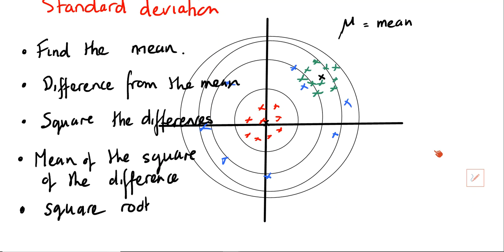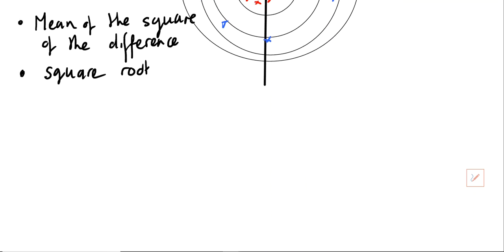That's why we needed to square the differences, and then we square root to undo that, to get the right units back. Let's just talk through this now as a formula.